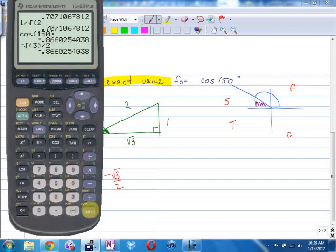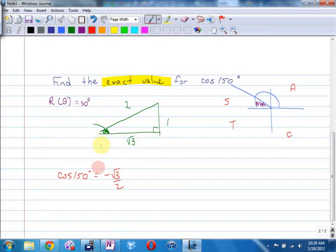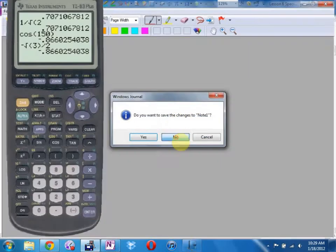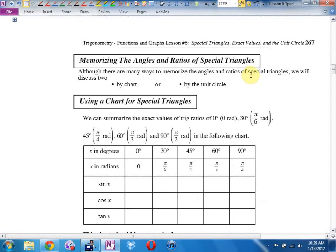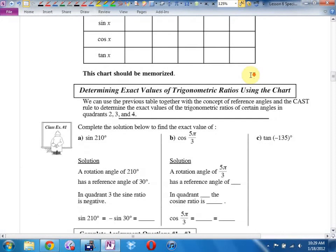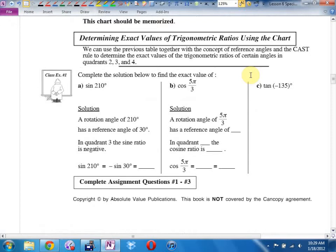So, turn to, or go to example 1 here. Example 1a says, find the sine. First of all, Maria, can you read the instructions to me here? To find the exact value. There's my trigger phrase, which says to me, don't be using a calculator. Apparently you can do all this in your head. And what do they want me to find in A? The sine of 210 degrees.